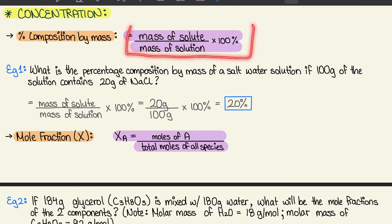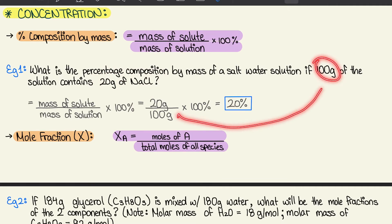Moving to 9.2: concentrations. Percent composition by mass equals the mass of solute over mass of solution times 100%. Example: a saltwater solution where 100 grams of solution contains 20 grams of NaCl gives 20/100 × 100 = 20%.